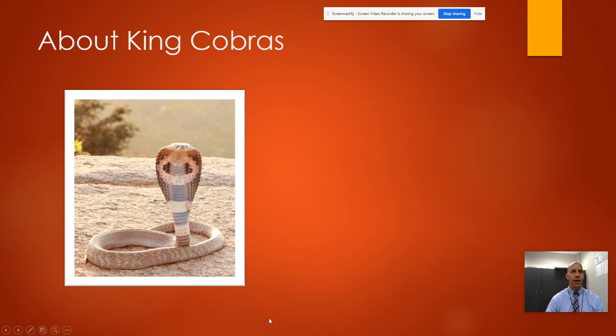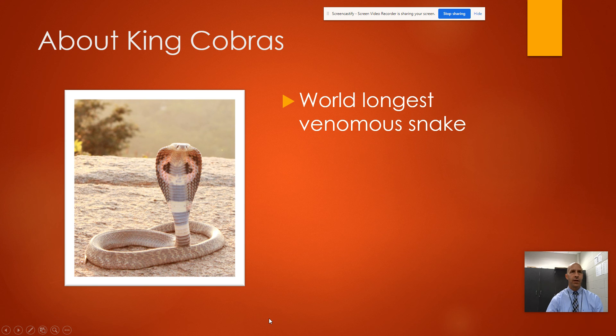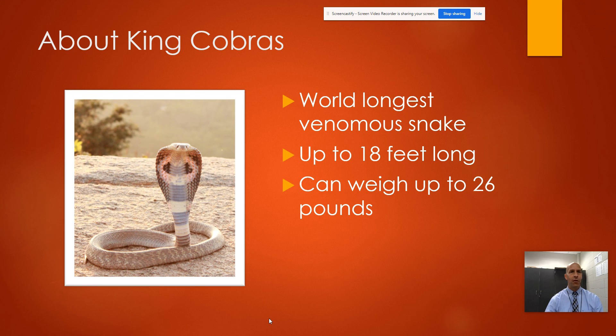A couple things about the King Cobra - this is my favorite snake. It's the world's longest venomous snake. They can get up to 18 feet long. I've actually seen one in person that was around 15 feet long - it's pretty impressive to see a snake that long. They can weigh up to 26 pounds.